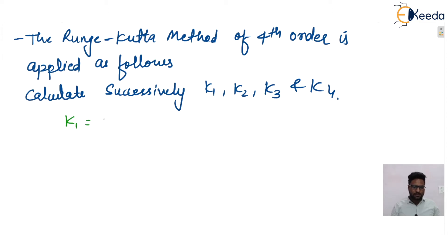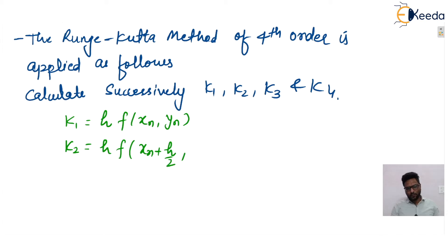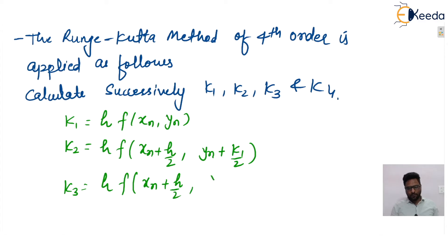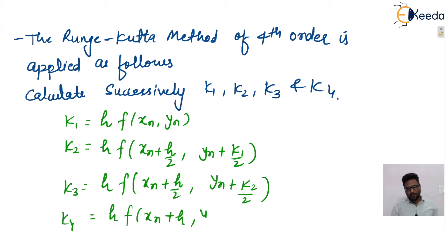The formula for k1 is: k1 = h · f(xn, yn). Similarly, k2 = h · f(xn + h/2, yn + k1/2). Then k3 = h · f(xn + h/2, yn + k2/2), and k4 = h · f(xn + h, yn + k3). These are the four parameters k1, k2, k3, k4 and their corresponding formulas.